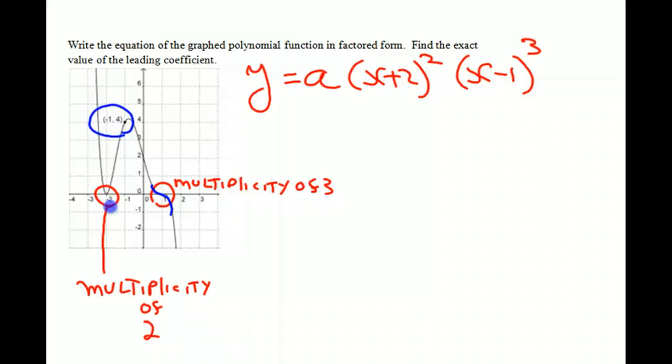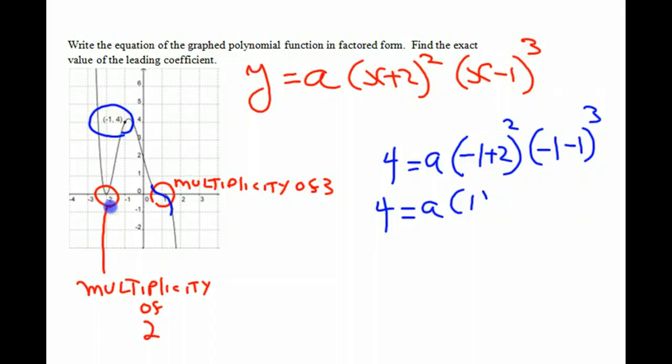Okay, so at negative 1, 4, y is equal to 4. And x is equal to negative 1. So we substitute negative 1 for x. So instead of x plus 2 squared, you get negative 1 plus 2 squared. And then instead of x minus 1, we have negative 1 minus 1 to the third power. Negative 1 plus 2 is 1, so that's squared. Negative 1 minus 1 is negative 2, and that's cubed.